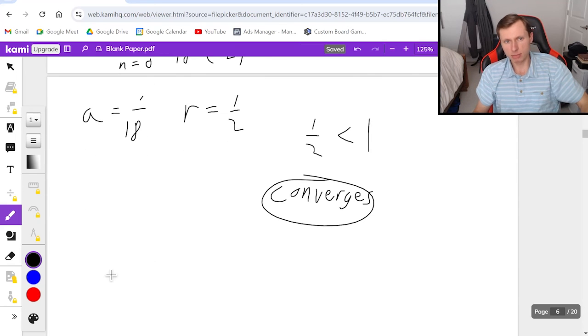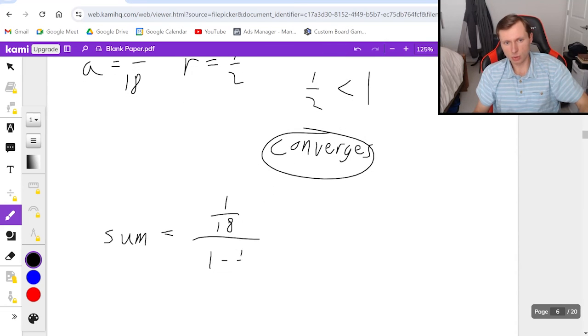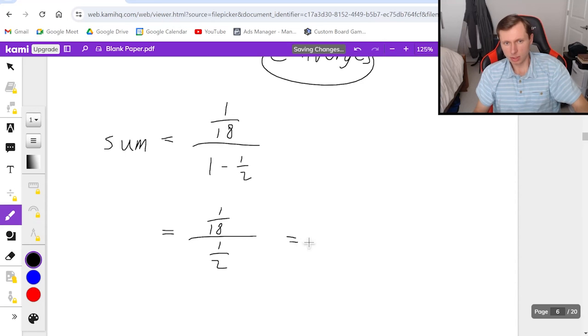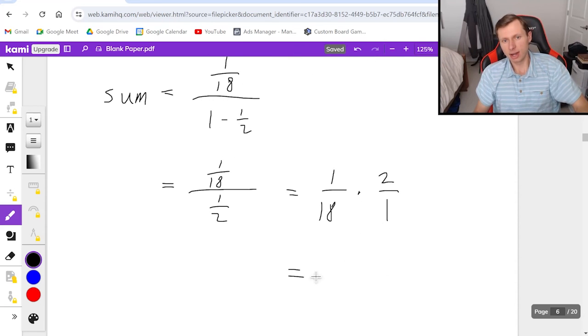So this sum is pretty challenging to find. So let me show you. Sum is one over 18 divided by one minus one half. This will be one over 18 divided by one half, multiplied by the reciprocal. So it's one over 18 times two over one. Final answer one ninth. And there's our sum.